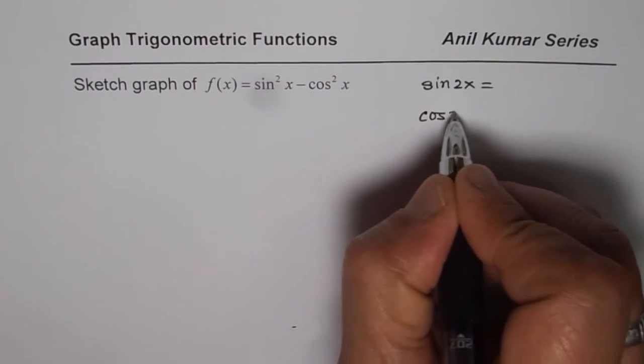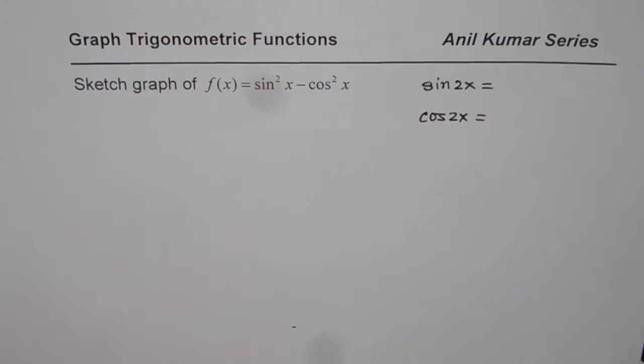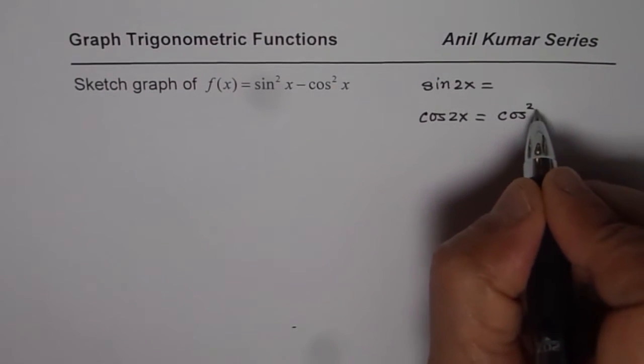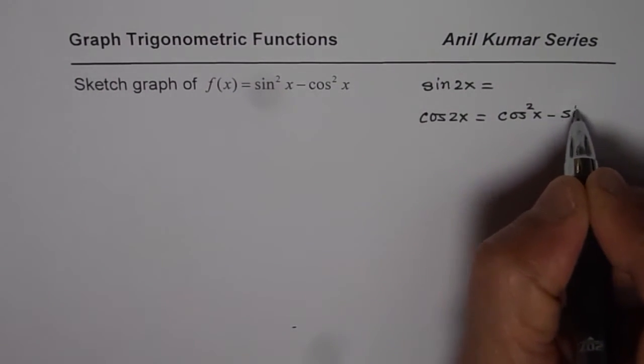The formula for cos(2x) can help us do something about it. Well, cos(2x) is cos²x - sin²x. Correct.